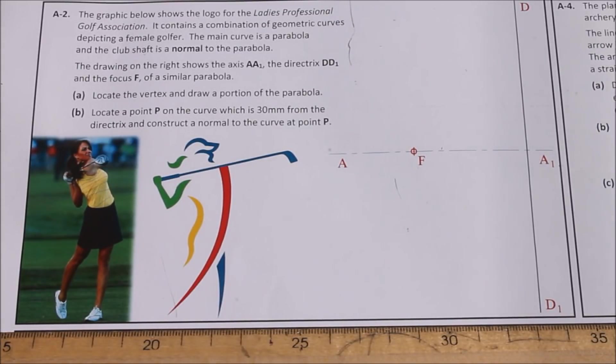So what you need to do is locate the vertex and draw a portion of the parabola, and then locate point P on the curve which is 30mm from the directrix and construct a normal to the curve at point P. Okay, and that represents the club shaft.